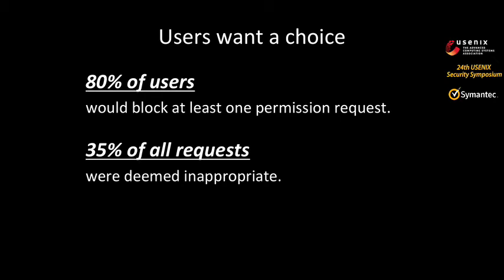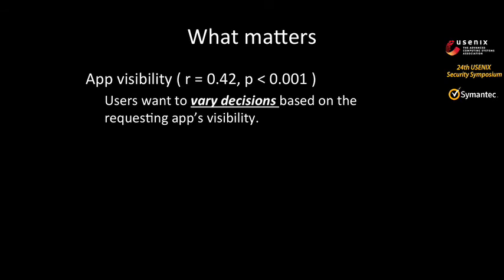One of the important questions we tried to answer was whether users would change their behavior if better informed on permission usage. 80% of users wanted to block at least one permission request, and 35% of all presented permission requests were deemed inappropriate, which they wanted to block. When users wanted to deny a permission, the visibility of the application requesting it had a significant impact — they wanted to vary their decision depending on whether they had a visible cue that the application was running. This suggests their decisions are contextual.